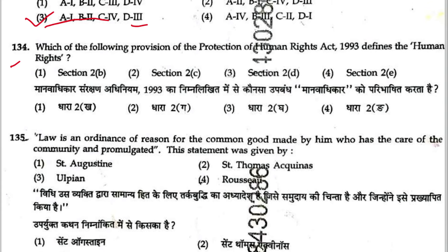Question 134: Which provision of the Protection of Human Rights Act defines human rights? Human rights are defined in Section 2(d). Section 2(b) defines chairperson of the human rights commission. Section 2(c) defines commission. Section 2(e) defines human rights court. Answer is 3.